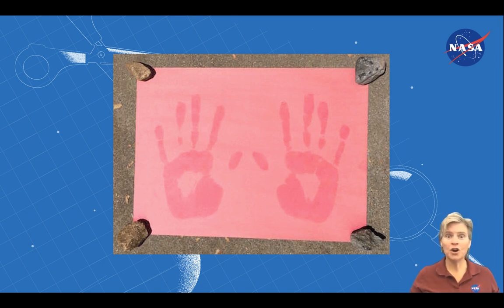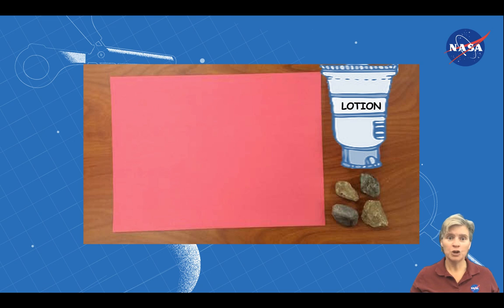How do you know it was the sunscreen that protected the paper? Maybe regular lotion would work just as well. Repeat the experiment using regular lotion. Be sure to wash all the sunscreen off your hands first before you apply the lotion. Then repeat the experiment.